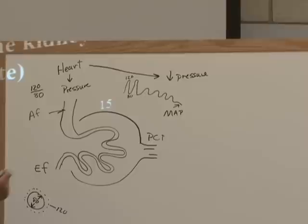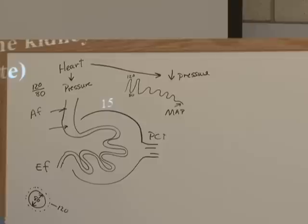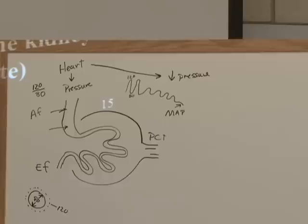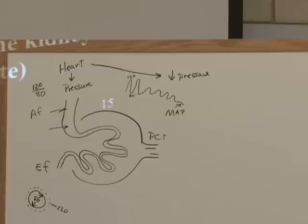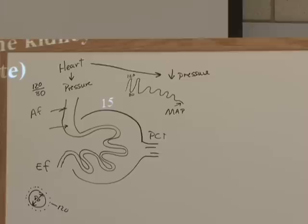We end up with a pressure called MAP — mean arterial pressure. By the time blood reaches the afferent arteriole, it's quite far from the heart and has gone through many branches: from the aorta to the renal artery, then segmental arteries, interlobar arteries, arcuate arteries, and interlobular arteries. Every time blood vessels divide, pressure drops. By the time you get to the interlobular artery leading to the afferent arteriole, systolic and diastolic pressures have merged and we end up with a mean arterial pressure.